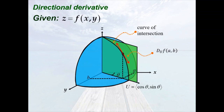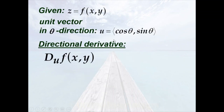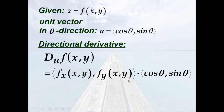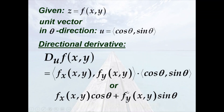In particular, for a function z equals f of x, y, the partial derivative of z with respect to x is just the rate of change of the function value at a point in the direction theta equals 0. To compute the directional derivative, given z equals f of x, y and a unit vector u in the theta direction — that is u equals (cosine theta, sine theta) — the formula is just the dot product of the vector containing the partial derivatives of your function and the unit vector. This is equivalent to the partial derivative of f with respect to x times cosine theta, plus the partial derivative of f with respect to y times sine theta.